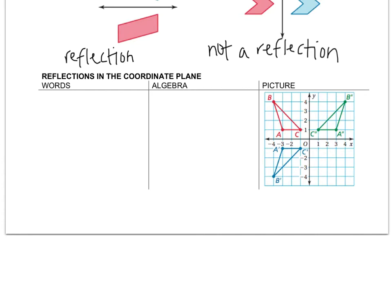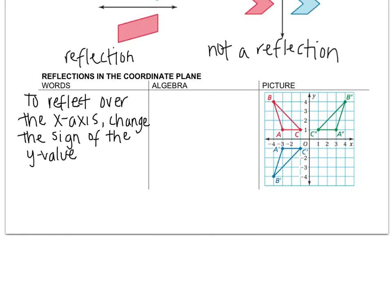So there are two types of reflections that we're going to talk about. One is a reflection over the y-axis, the other is a reflection over the x-axis. So first thing is to reflect over the x-axis, you change the sign of the y value. So you're keeping the axis you want the same and changing the other coordinate.